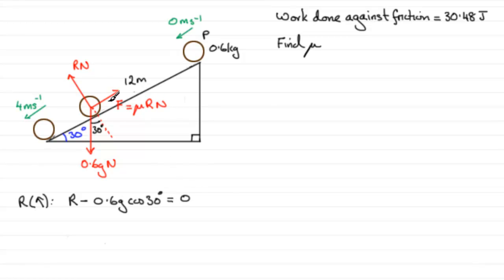Because the frictional force is perpendicular to this line of action here and there's no resultant force. So that means that R is equal to 0.6g cosine of 30 degrees, and if you work that out, you end up with R equaling 5.0922... Newtons. So now that we've got R, we can think about that work done against friction.